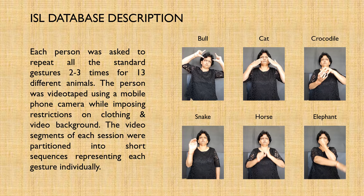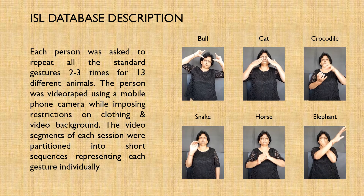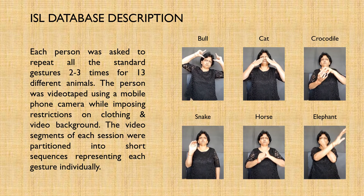Each person was asked to repeat all the standard gestures two to three times for 13 different animals. The person was videotaped using a mobile phone camera, with restrictions imposed on clothing and video background. The video segments of each session were then partitioned into short sequences representing each gesture individually.